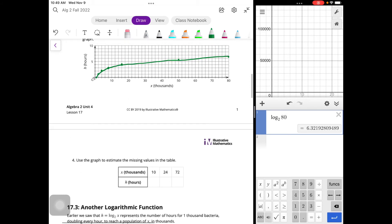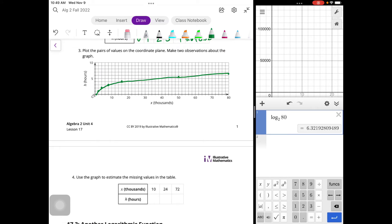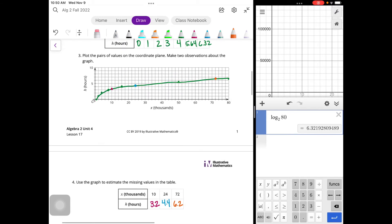And then we're going to use the graph to estimate the missing values on the table. So 10 is going to be a little bit more than 3. We could say it's maybe like 3.2, 3.3, something like that. So that's going to be somewhere like here, 3.2-ish. 24 would be about here, and again, I'm not great at drawing my lines, but that would be like 4.4. And then 72 would be right about here, so that's going to be like 6.02, something like that. And that's how we can use some graphs to estimate some of our missing values.